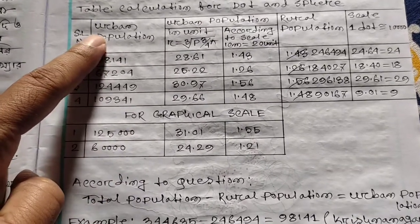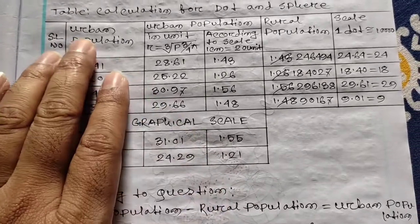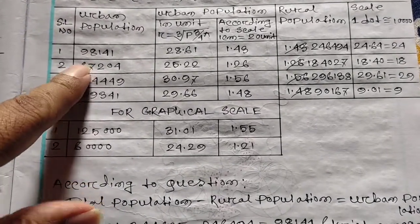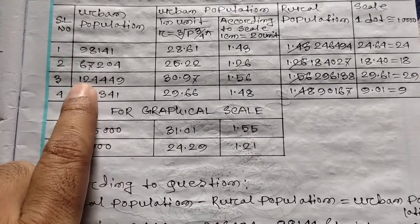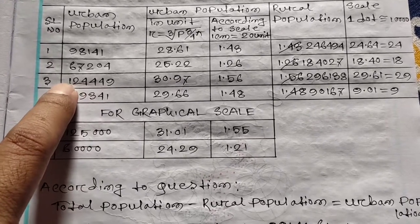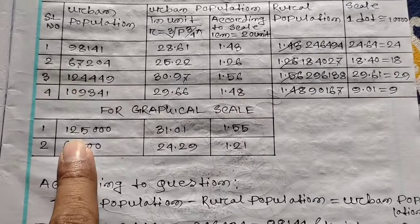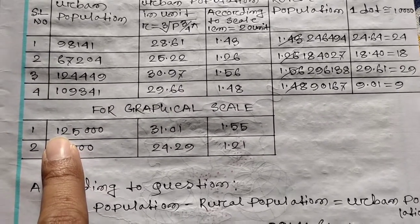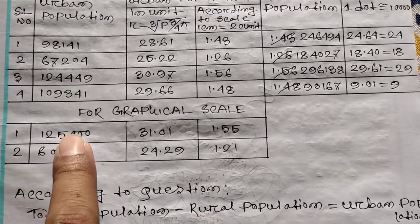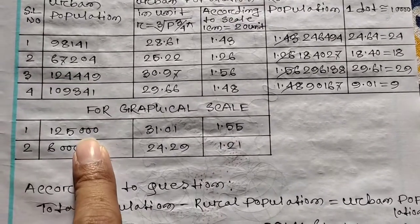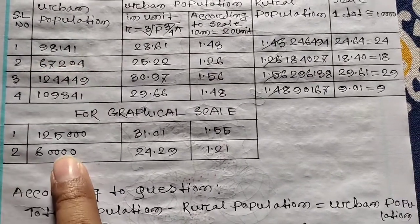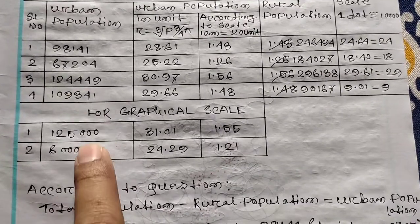What is the calculation of the graphical scale? The graphical scale uses the highest population. The highest is the highest value. For round figure, we wrote 1,000,000 to 1,000,000 and 3,000,000 to 1,000,000,000. The small part is 100,000. We will do it with 600,000.